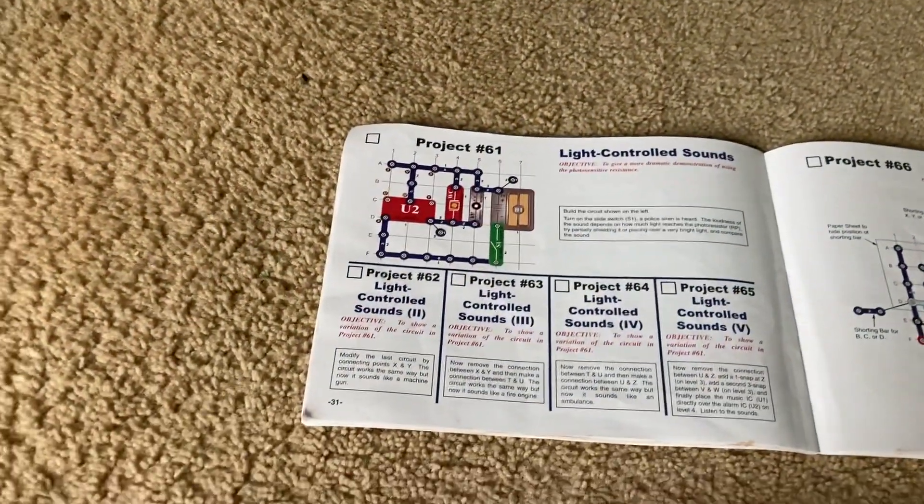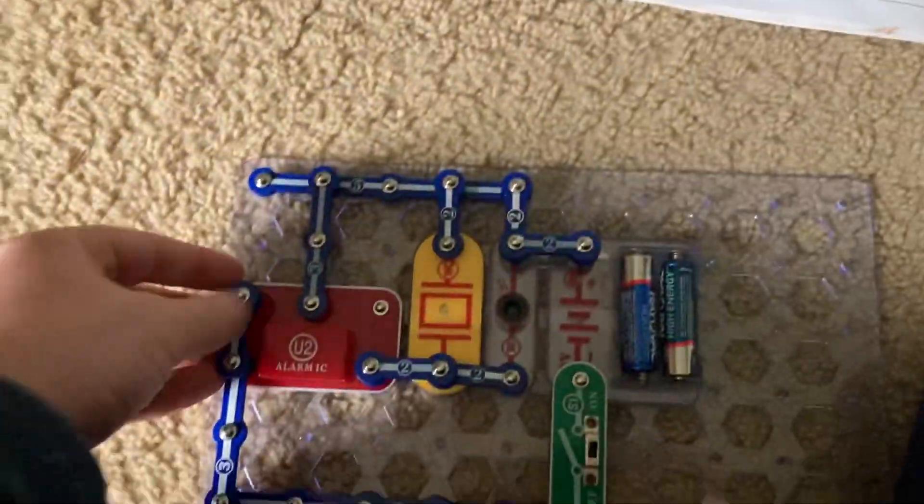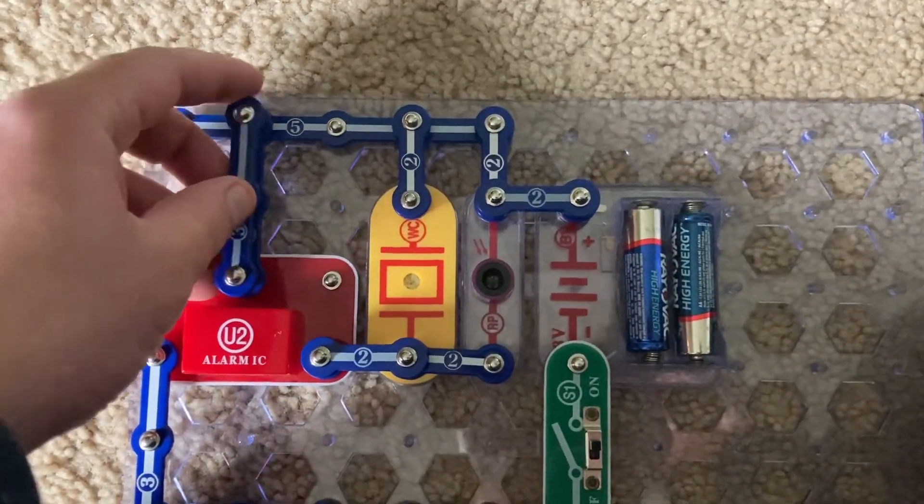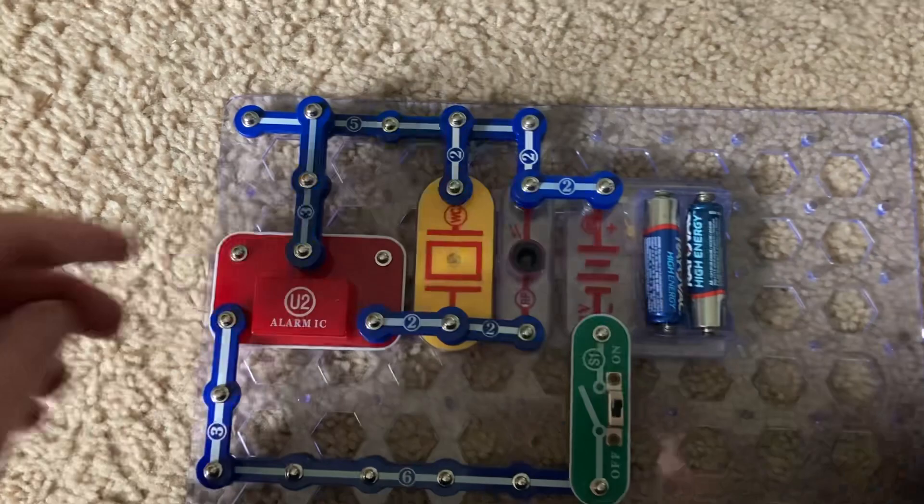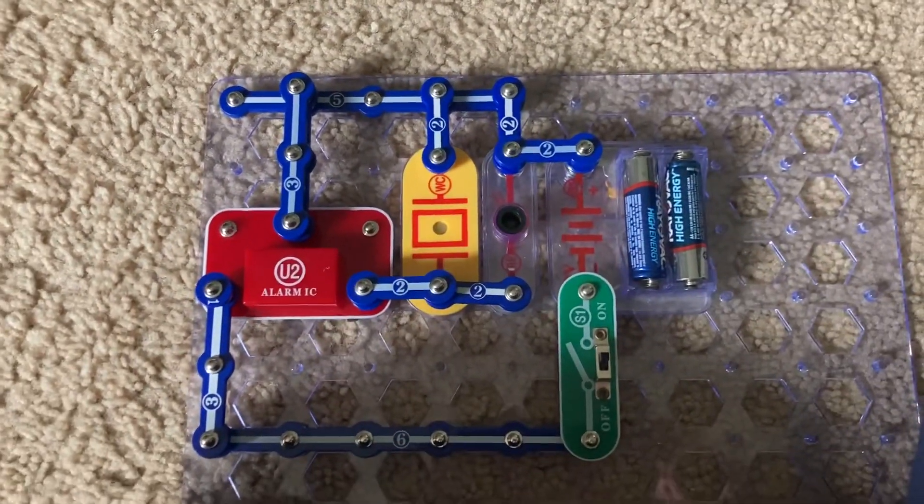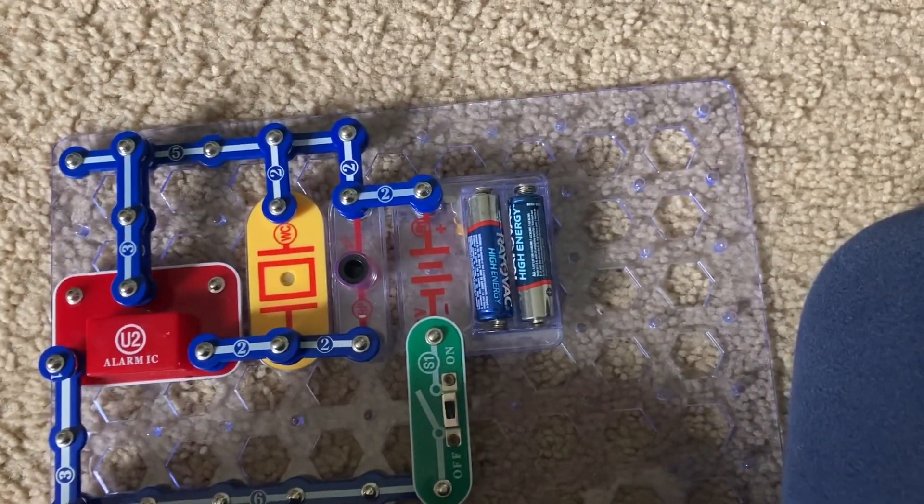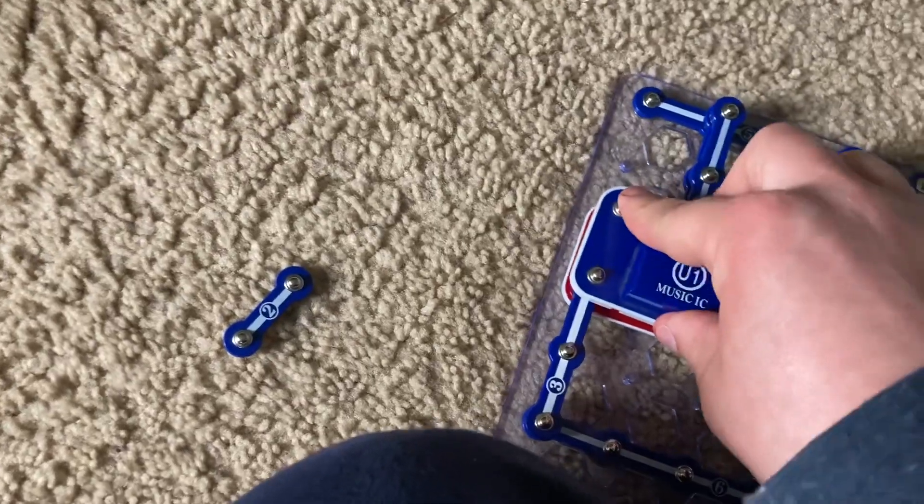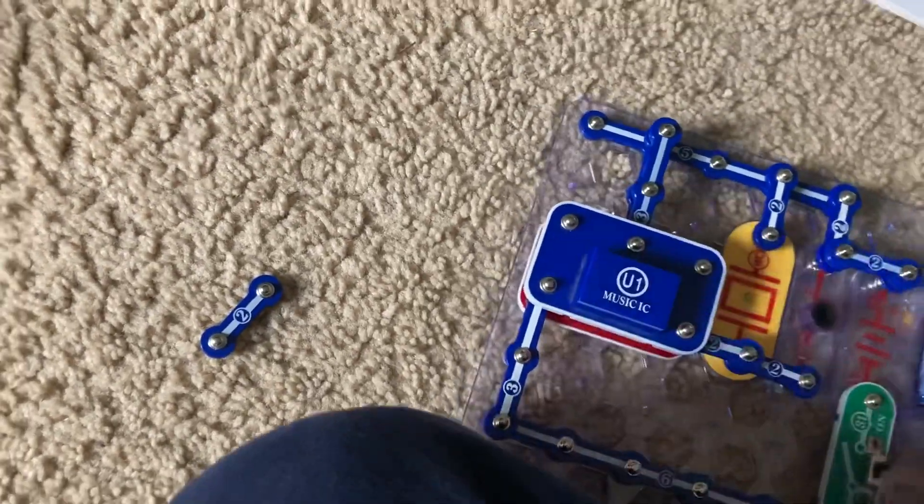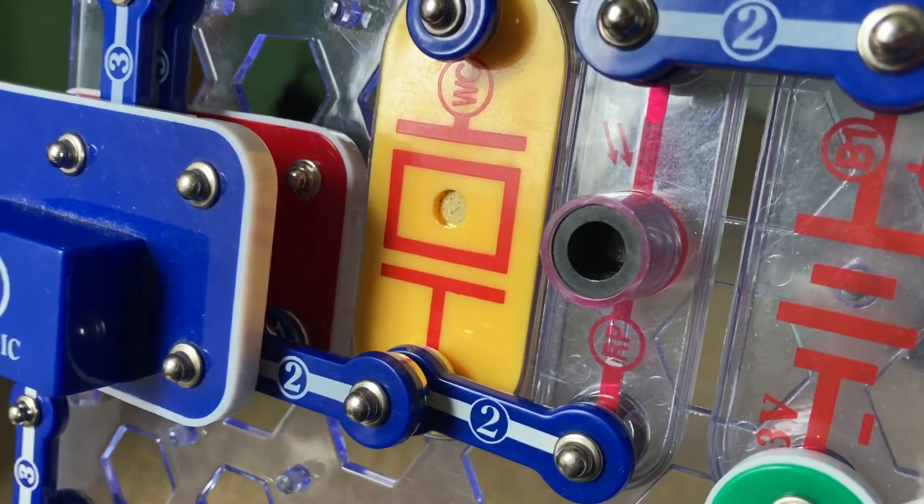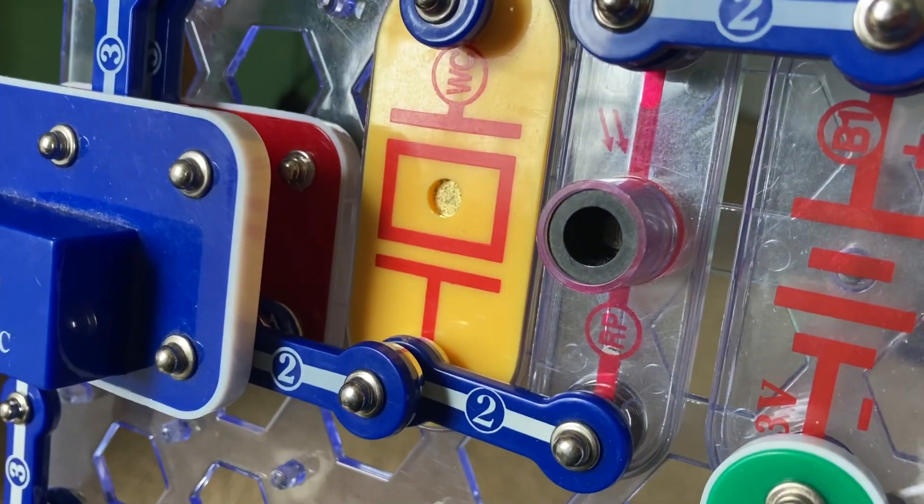And then lastly, removing this connection, I'm going to place this three-snap wire directly on top of the bottom one. And then after putting this one-snap wire over there, I'm going to place the music integrated circuit directly over the alarm integrated circuit. And with enough light on the photoresistor, you can hear music playing in addition to the siren.